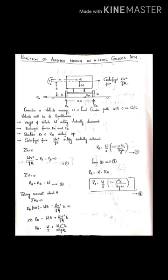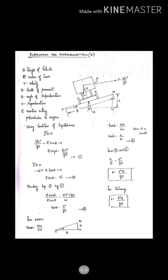Moving on to the main derivation: the relation for super elevation. Consider the vehicle traveling on a circular path. The centrifugal force acts outwards, weight acts downwards, the road width is b, and the elevation is shown between points M and N. Theta is the angle of super elevation and small e is the rate of super elevation. Since theta is very small, the widths OM and ON are approximately equal.